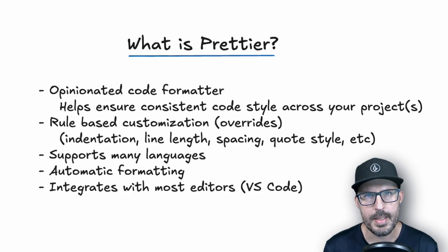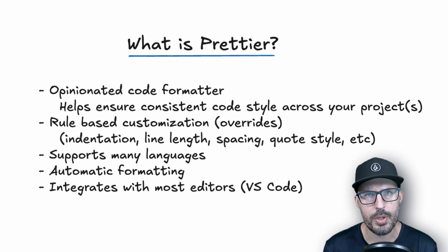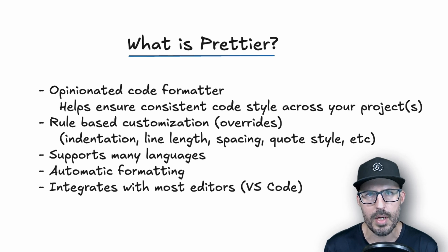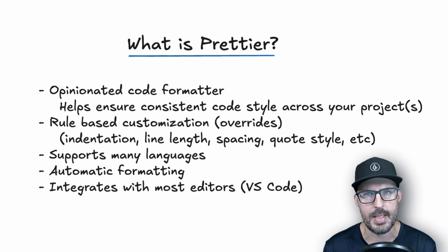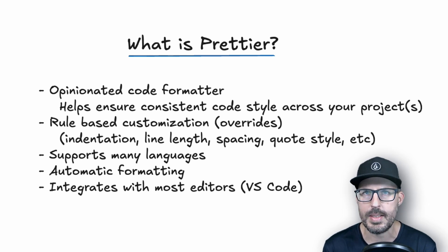So what exactly is Prettier? Prettier is an opinionated code formatter that helps ensure consistent code style across your various projects. The opinionated part means that Prettier comes with its own set of rules, some of which are overwritable through rules-based customization. This allows you to overwrite things like indentation, line length, spacing, quote style, and so on and so forth.